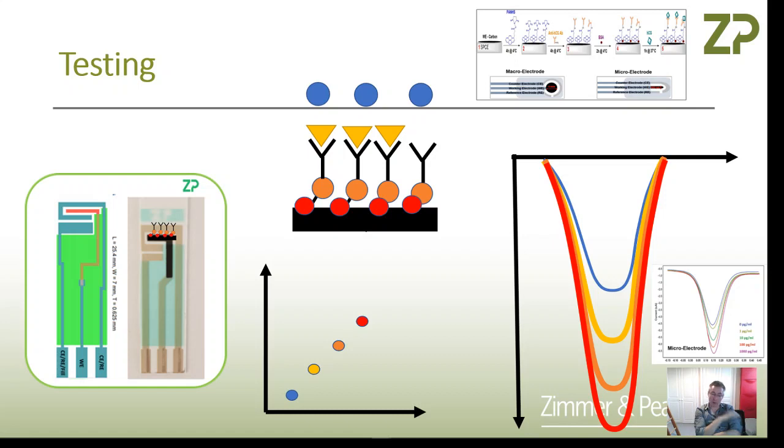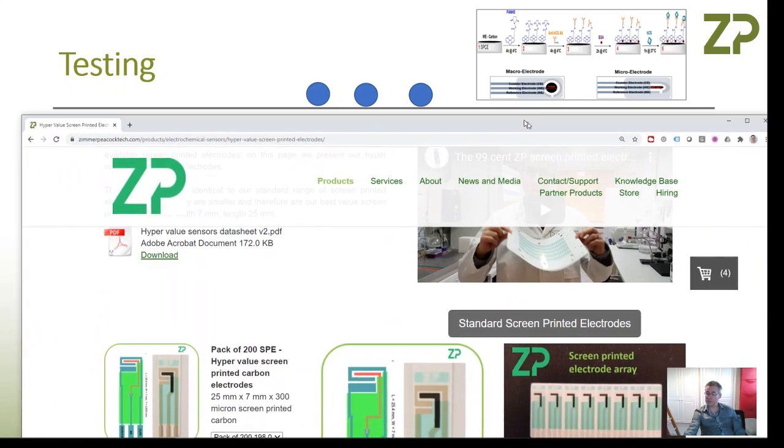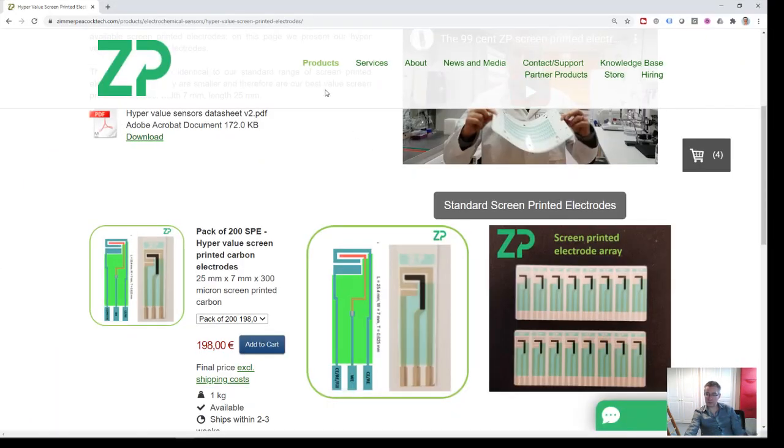And then we often have to block the electrode to stop what's called nonspecific binding. So once we've then put the antibody on there and we put the nonspecific binding material down, then we can start testing the electrodes with the protein of interest and make sure that we get a signal that's proportional to the protein concentration. And as I say, at Zimmer and Peacock, it's probably worth saying that we obviously have lots of screen printed electrodes.